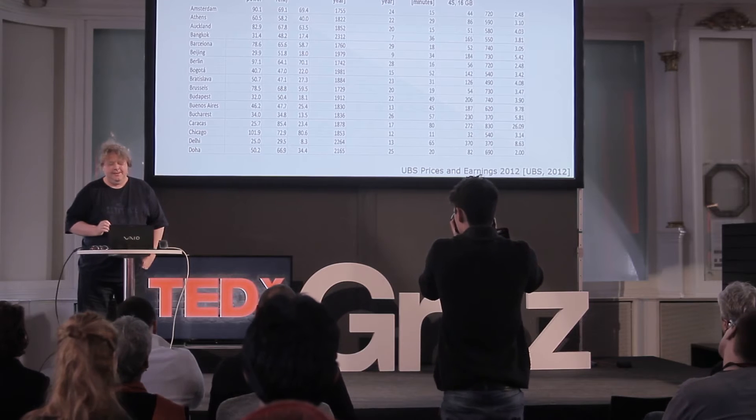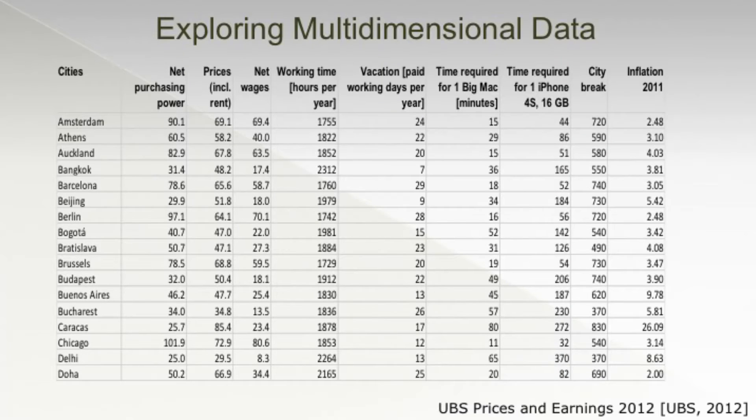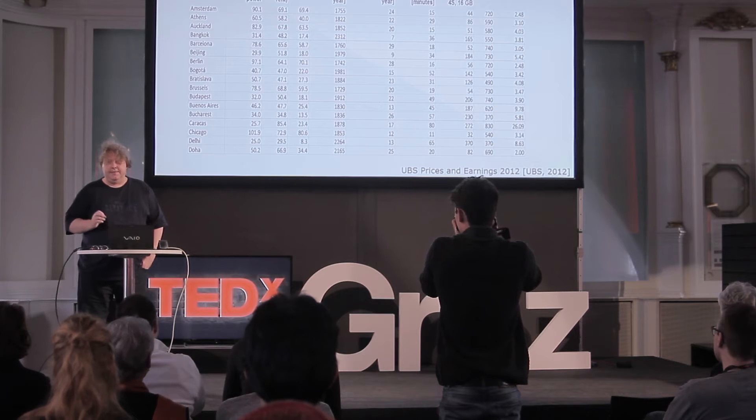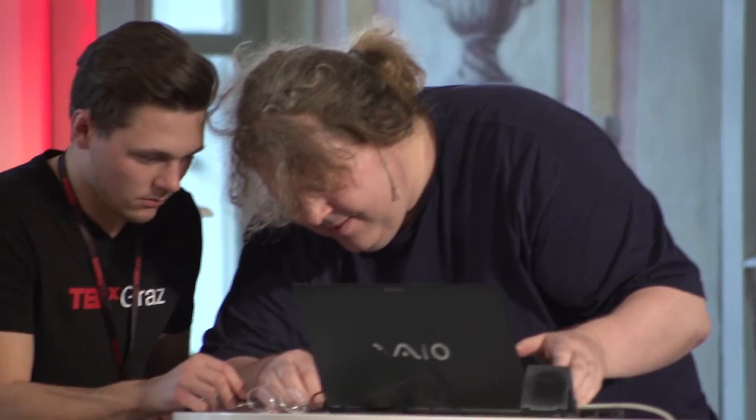My second example is multidimensional data — tabular data, like a spreadsheet. This is actually from the UBS bank in Switzerland. Every three years they do a prices and earnings survey of cities around the world; this is the 2012 data. There are 70 or so cities, and for each city they have a few hundred values — indices like net purchasing power and prices. Each variable is a column and each record, a city, is a row. In the table you can sort of see a little bit, but there's an alternative.